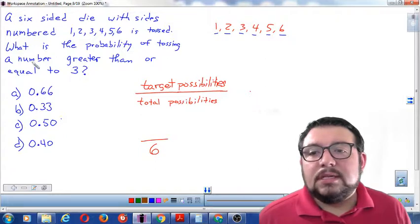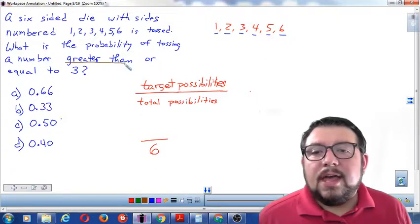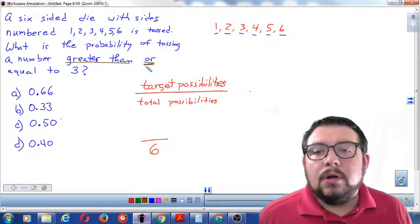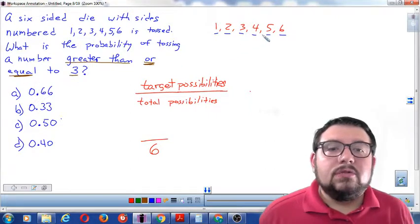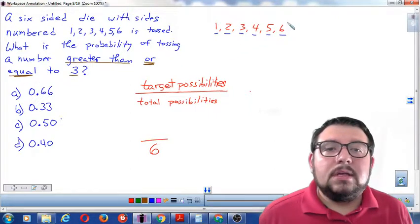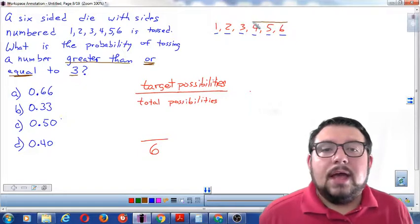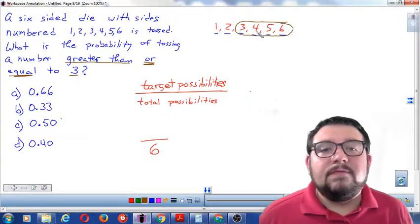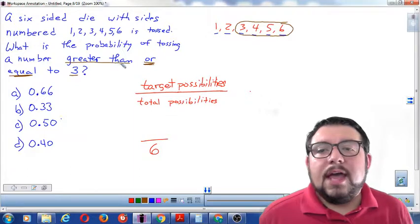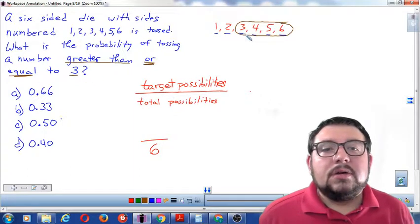Now how many of those are the ones that I want? Well, I look back at my problem and it says a number greater than or equal to 3. So greater than 3 would be these numbers right here. And or equal to means it can also be 3. So these numbers are my target numbers. I'm targeting 3, 4, 5, or 6.